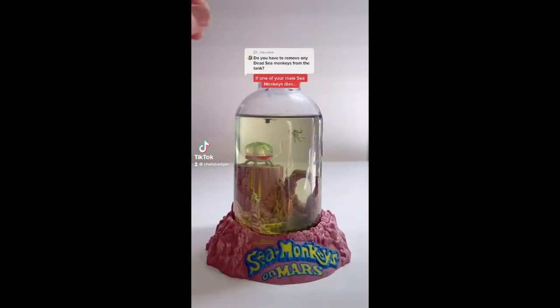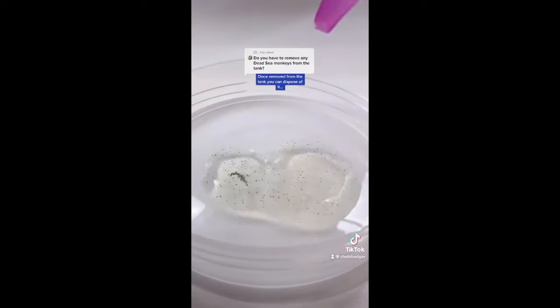If one of your male sea monkeys dies you can remove its body from the tank by using the bubbler tool. Once removed from the tank you can then dispose of it.